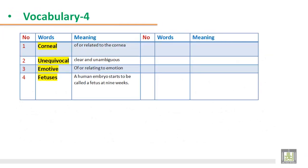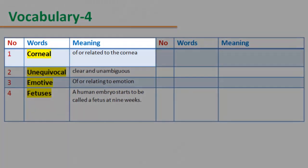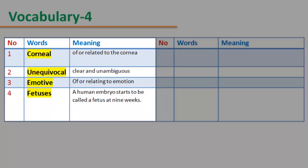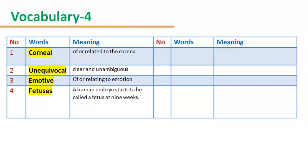Vocabulary 4. Number 1 — Corneal: of or related to the cornea. Number 2 — Unequivocal: clear and unambiguous. Number 3 — Emotive: of or relating to emotion. Number 4 — Fetuses: the human embryo starts to be called a fetus at nine weeks.